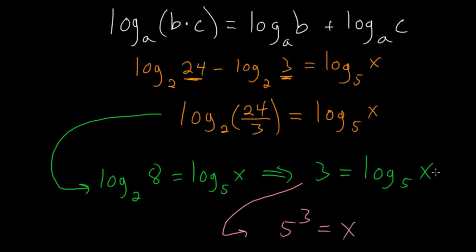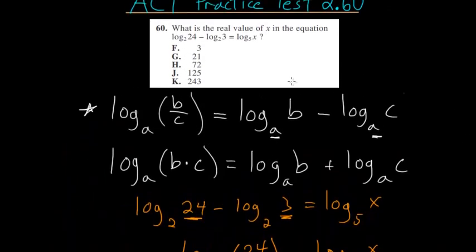Logarithms are always equal to whatever the exponent is. This lower number here is always the base, and you'll always raise the base to your exponent. So five to the third power equals x. Five to the third power is just five times five times five, which is 125. So x is 125. If we go up to our answer choices, choice letter J will be our final answer.